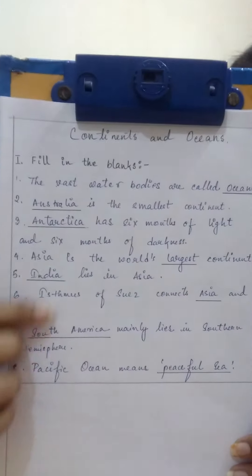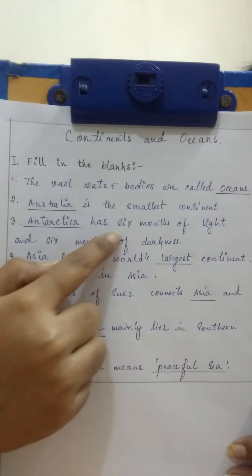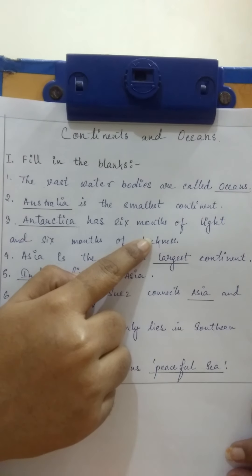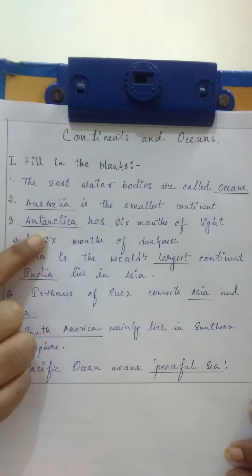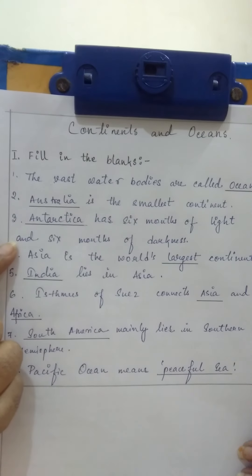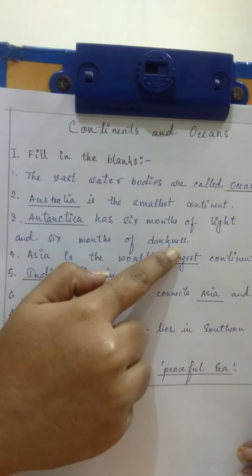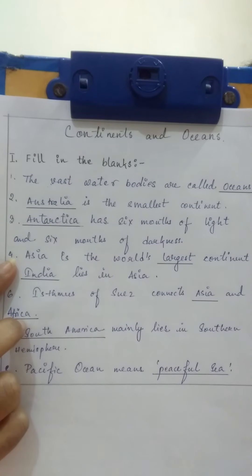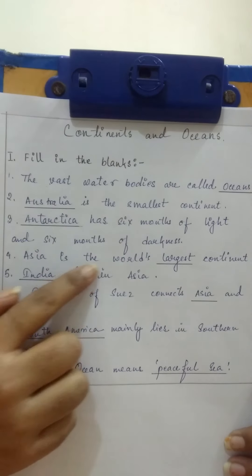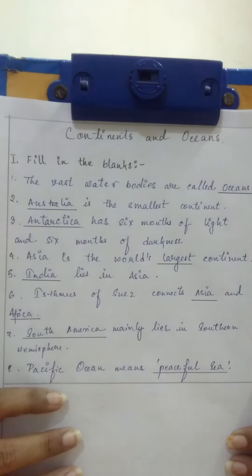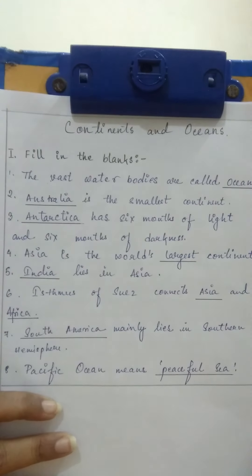Filling the blanks is the first topic. Number 1: the vast water bodies are called oceans. Number 2: Australia is the smallest continent. Number 3: Antarctica has 6 months of light and 6 months of darkness. Number 4: Asia is the world's largest continent.